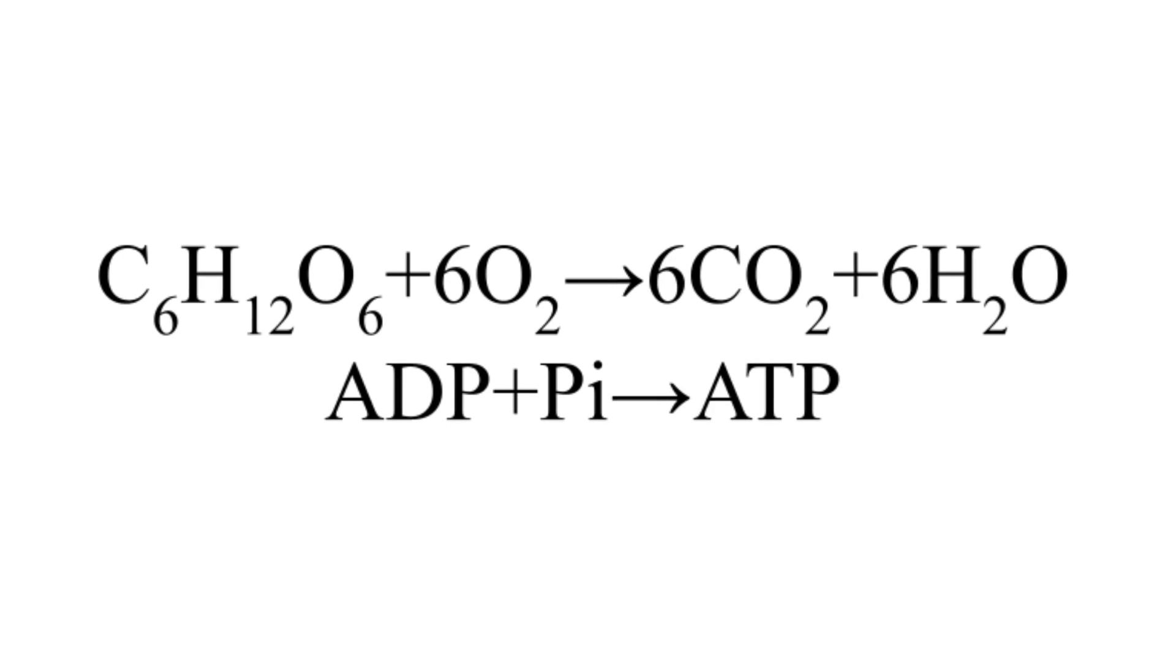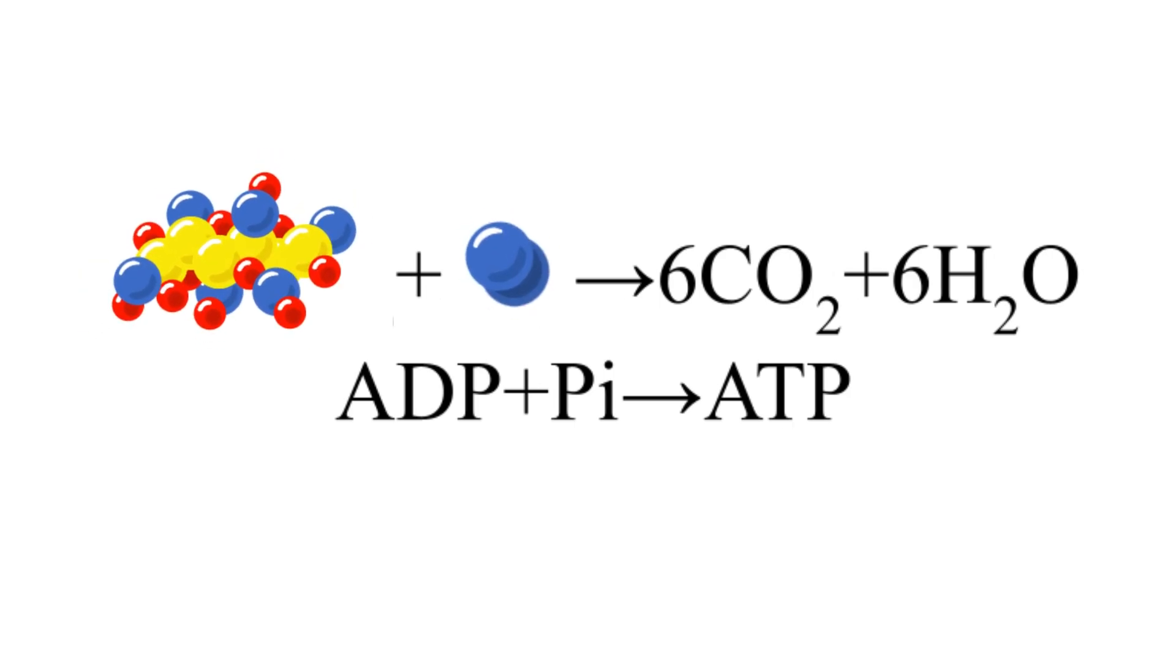The primary reaction of cellular respiration is this. The first part is a combustion reaction, turning glucose and oxygen into water and carbon dioxide. This process releases energy.